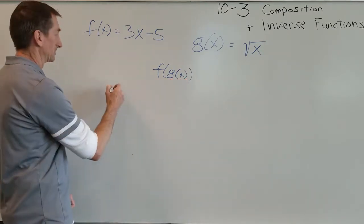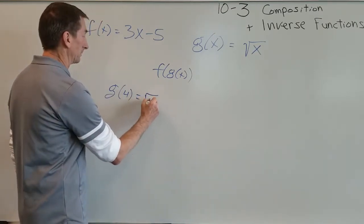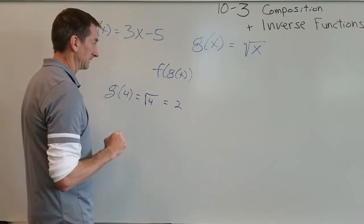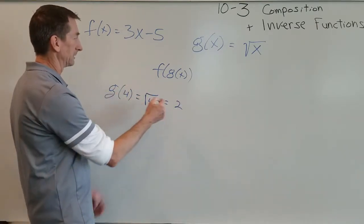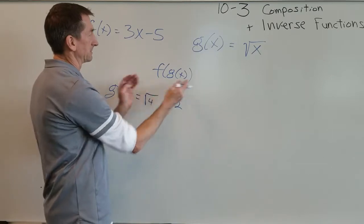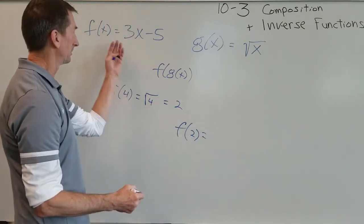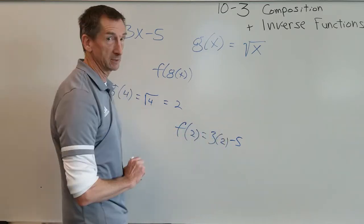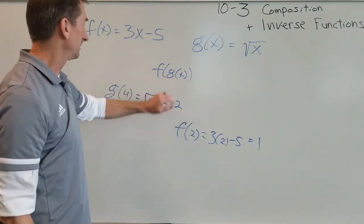Remember, working inside out. So g of 4 equals square root of 4, which is just 2. Now I'm going to take that 2 and work to the outside. I'm going to put it into f of x, so I'm looking for f of 2. Everywhere I see an x, replace it with a 2. 3 times 2 minus 5, that's 6 minus 5, which is 1. Completely different answer than I got for g of f of x. So f of g of x gives me a 1. G of f of x gave me a square root of 7.